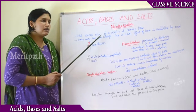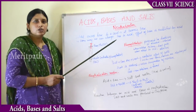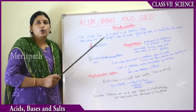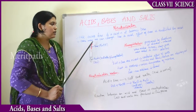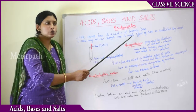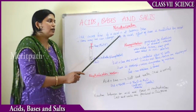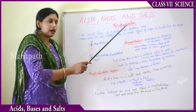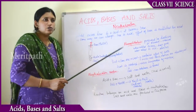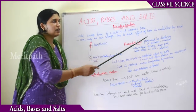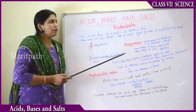In neutralization: if you add excess base to any acidic substance, it turns basic. Vice versa, you can change any base to an acid by adding excess acid to it. The effect of the base is nullified by the acid — 'nullified' means the effect of the base becomes zero.